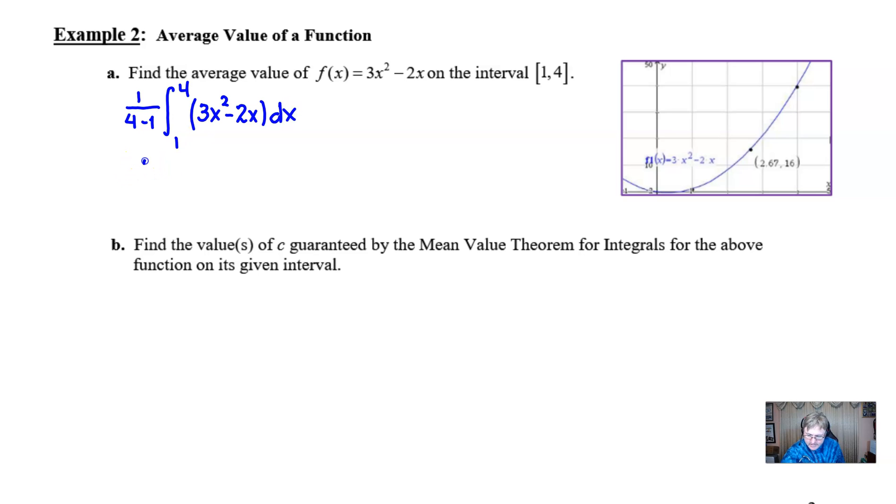Average value, we're going to take 1 over the difference between our endpoints, 4 minus 1, and integrate from 1 to 4 of our function 3x squared minus 2x with respect to x. This is going to be 1 third, and let's integrate. 3x squared is 3x cubed over 3, also known as x cubed, minus the integration of 2x is 2x squared over 2, also known as x squared. Now we have our 1 third out in front. We're going to plug 4 in for x. 4 to the third is 64, 4 squared is 16. Subtract plugging in 1, but not a whole lot's going to happen because 1 cubed minus 1 squared is 0. You get 1 third of 48, which is 16.